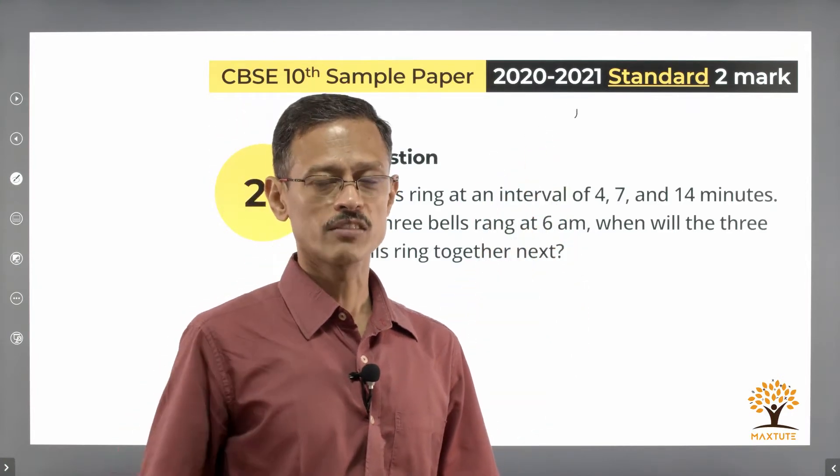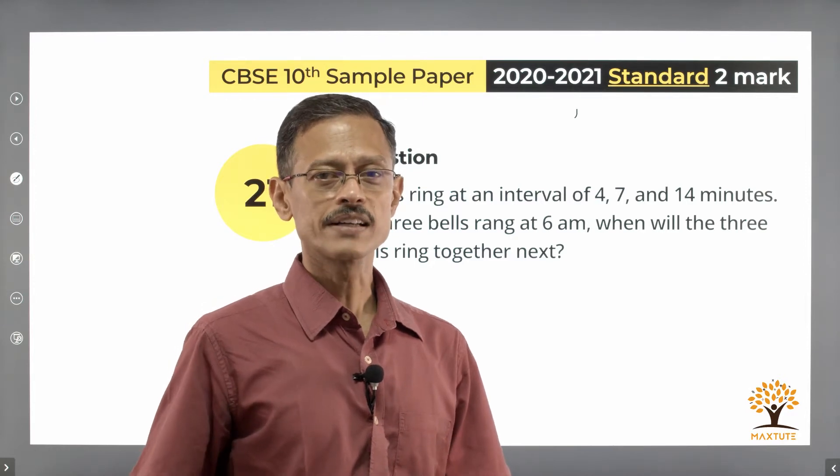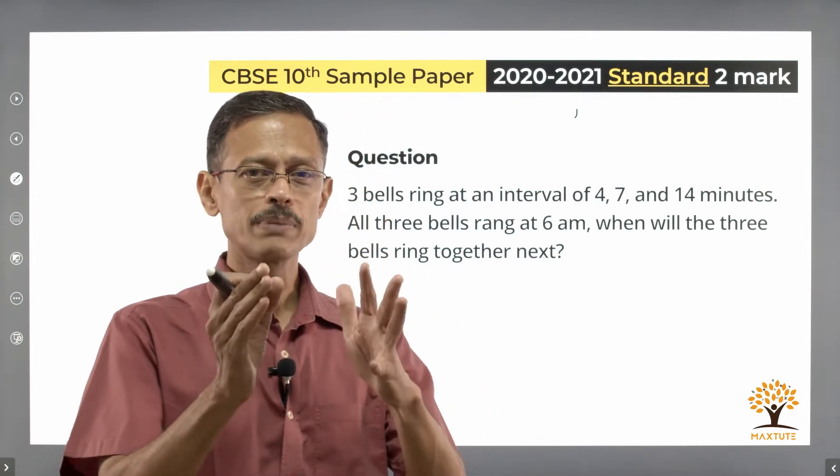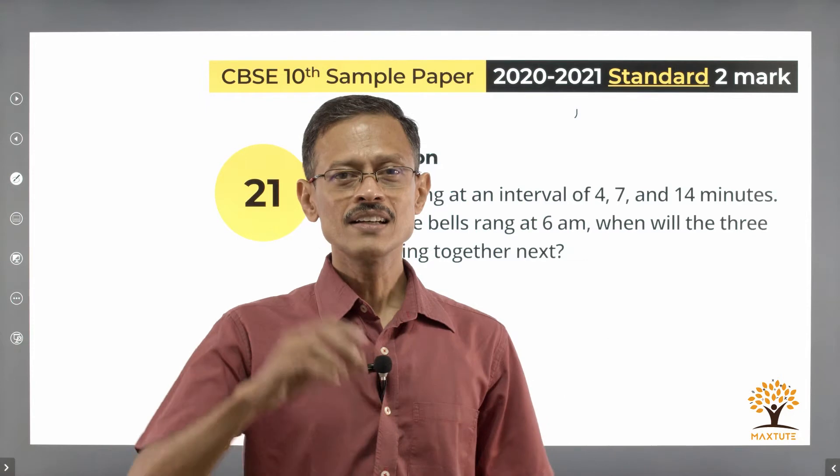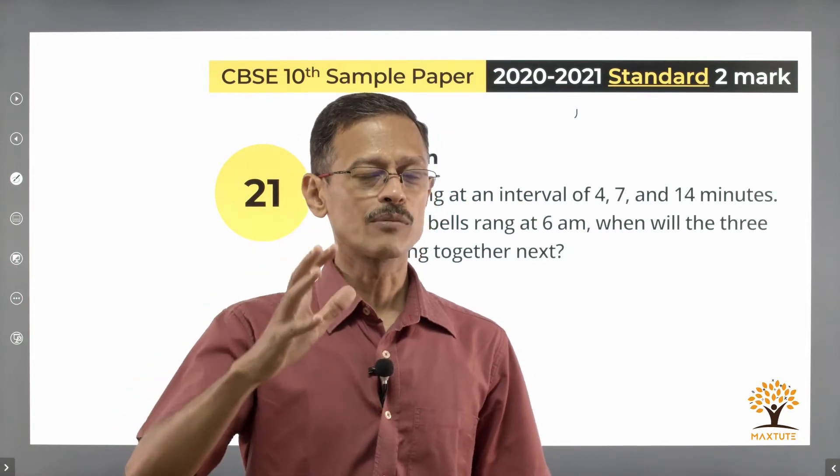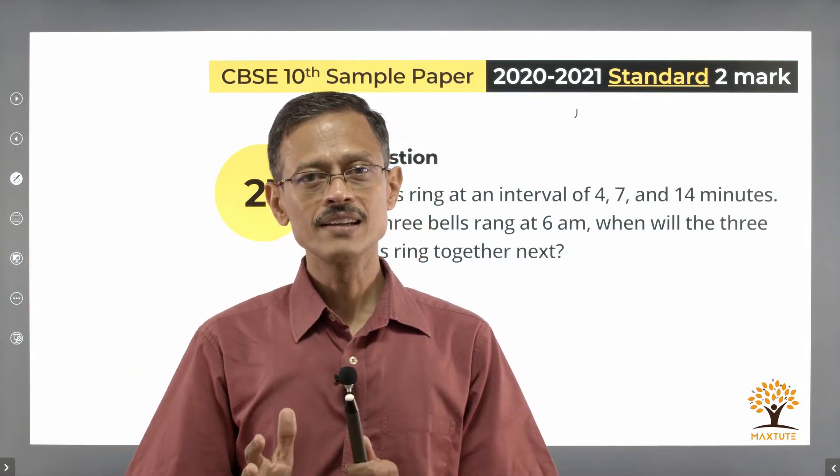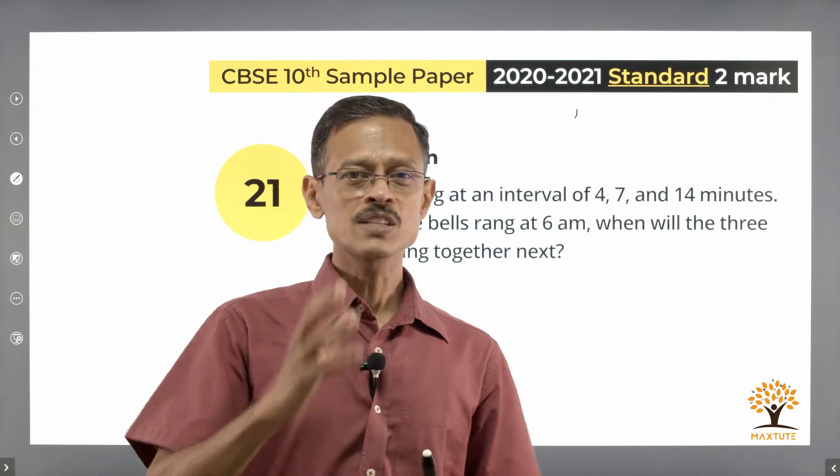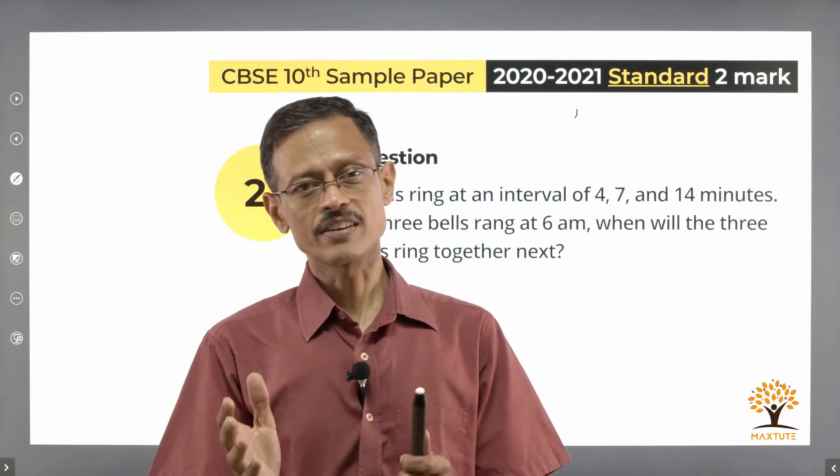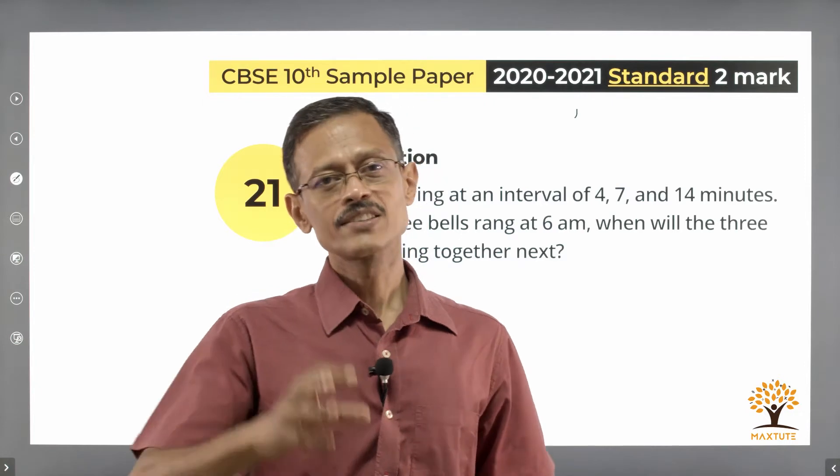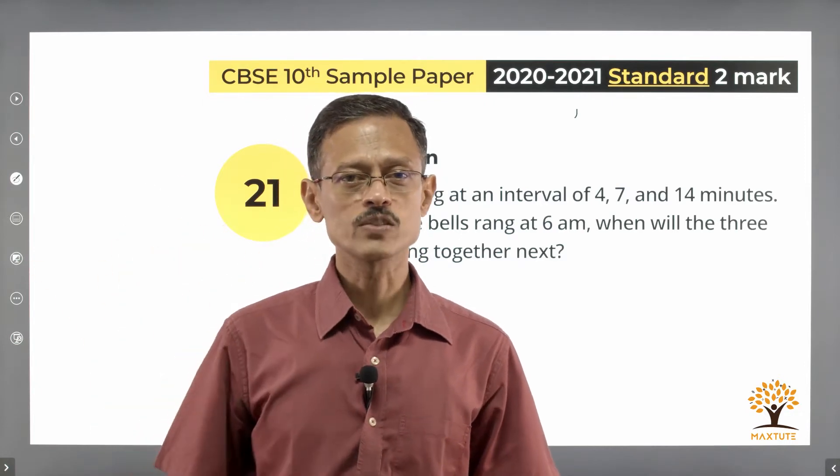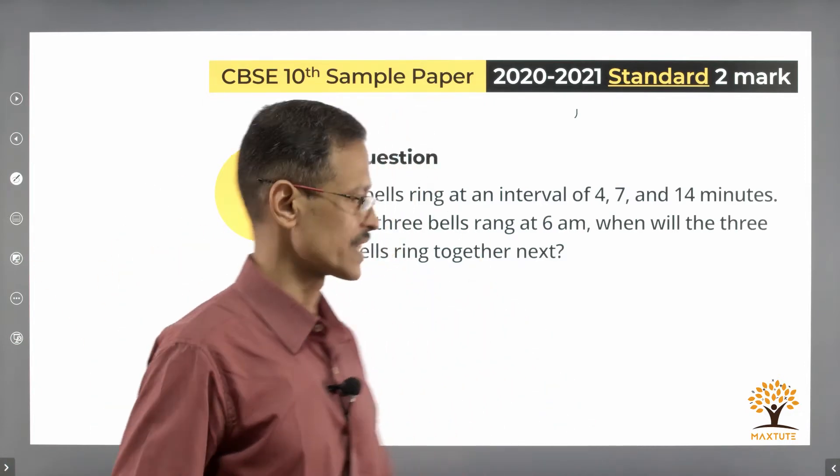Now the first of the two mark questions in the paper, this is from the chapter real numbers. I'm going to spend a bit of time on this question. I'm going to walk you through the logic and help you understand what we are doing. Subsequently, I'll walk you through how we should solve this in the examination. So first part is learning, second part is how we are going to get marks for this particular learning.